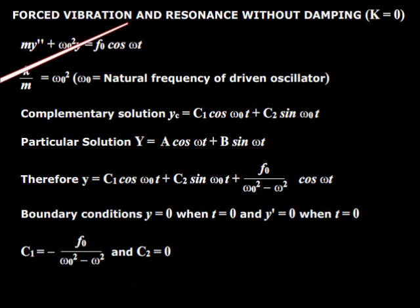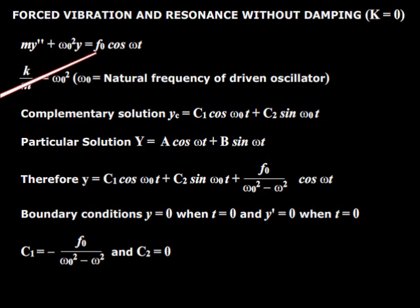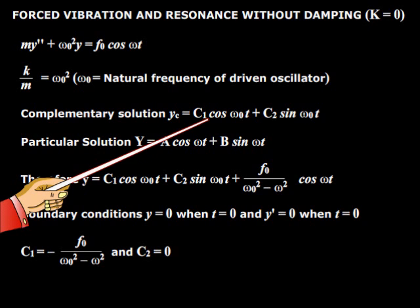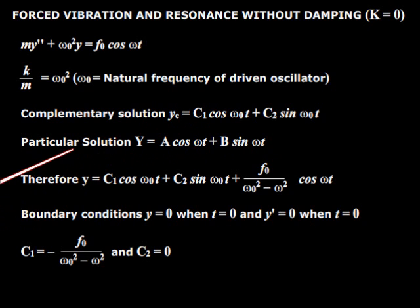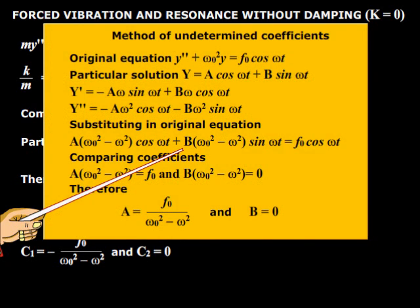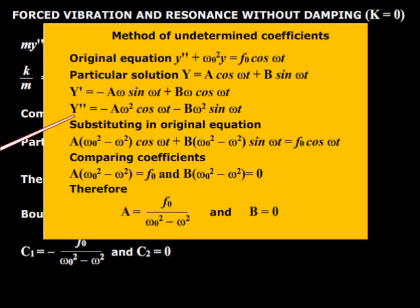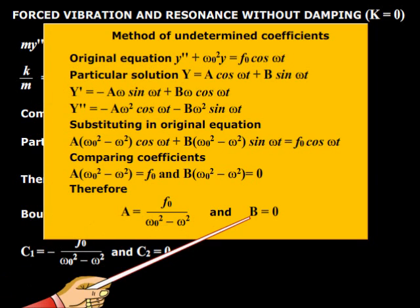Forced vibration and resonance without damping. Here is the differential equation. The complementary solution is this. The constants a and b are calculated by the method of undetermined coefficients, giving a equal to this expression and b equal to zero.